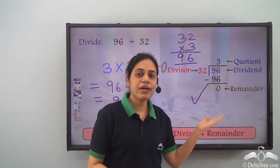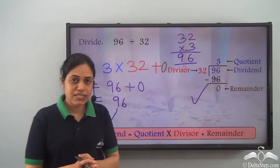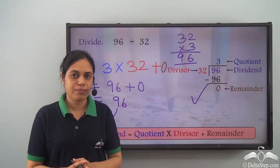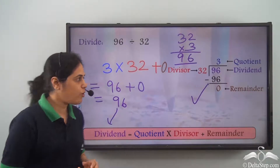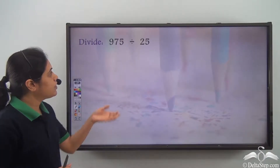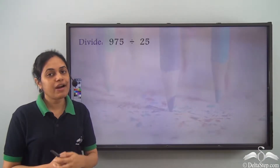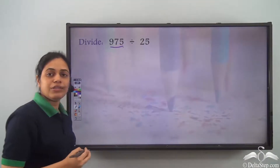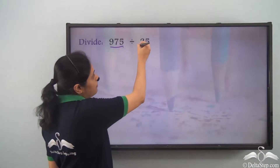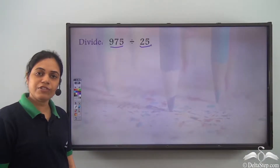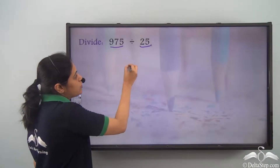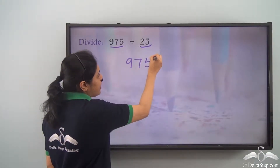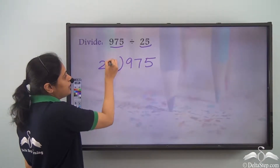The quotient is 3 and remainder is 0. That is how you divide a number by a two-digit number. Let us try some more problems. What is 975 divided by 25? I have a three-digit number, 975, divided by 25, a two-digit number.